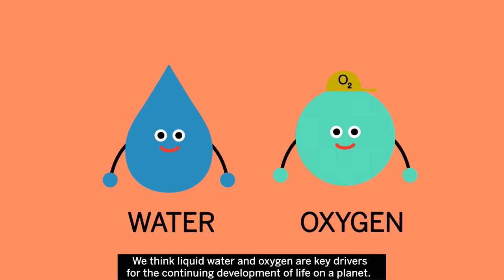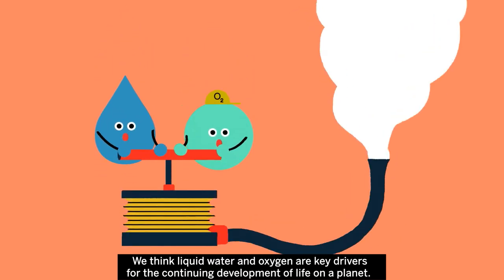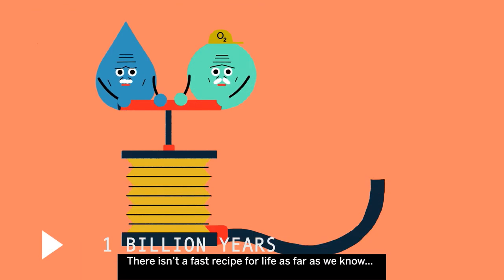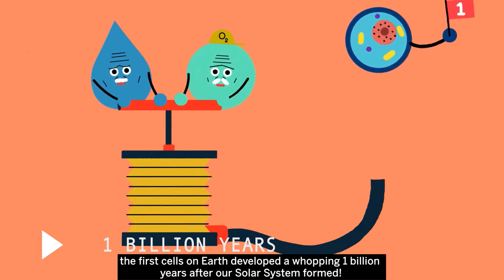We think liquid water and oxygen are key drivers for the continuing development of life on a planet. There isn't a fast recipe for life, as far as we know. The first cells on Earth developed a whopping 1 billion years after our solar system formed.